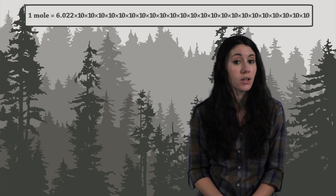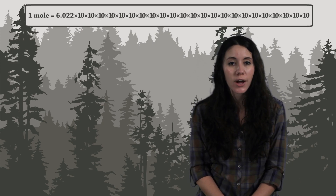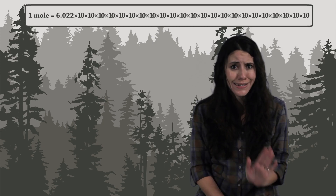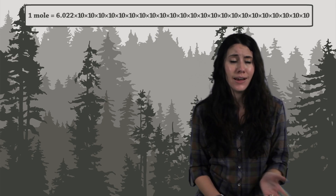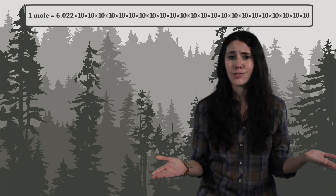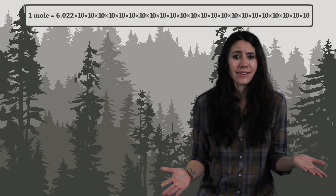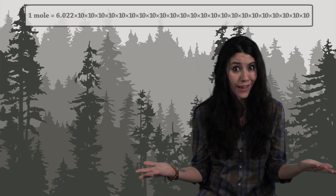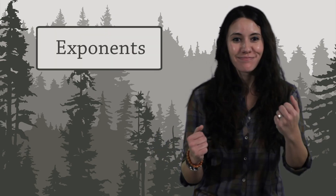In chemistry, there is a number called a mole which requires you to multiply 10 by itself 23 times. Okay, this is starting to get ridiculous. There's gotta be a better way. Oh, but there is — exponents.